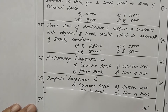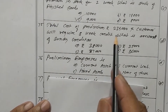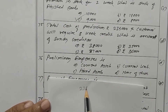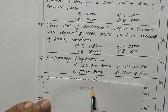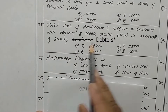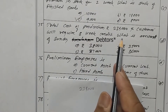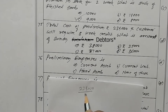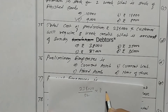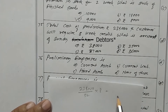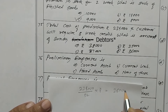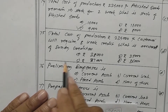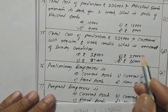Question 75. Total cost of production is rupees 2,34,000. Customer requires 8 weeks credit. So 2,34,000 divided by 52 into 8 weeks gives rupees 36,000. Option D is the correct one.